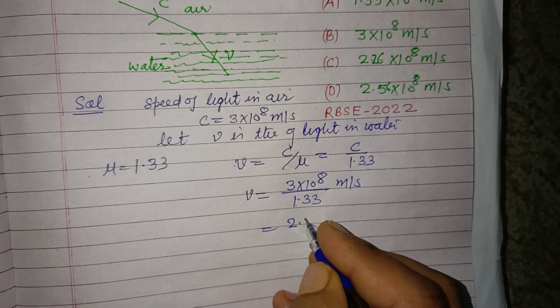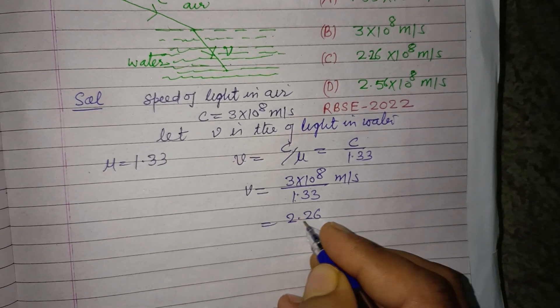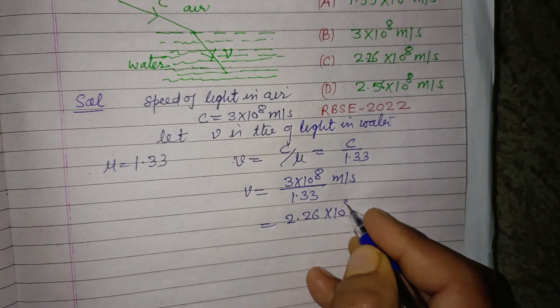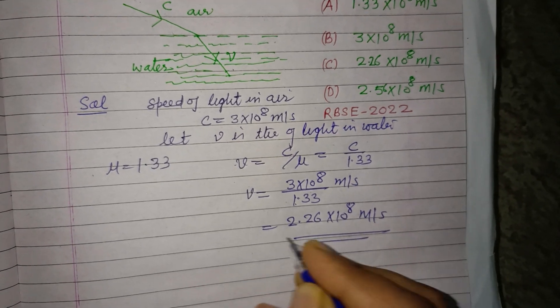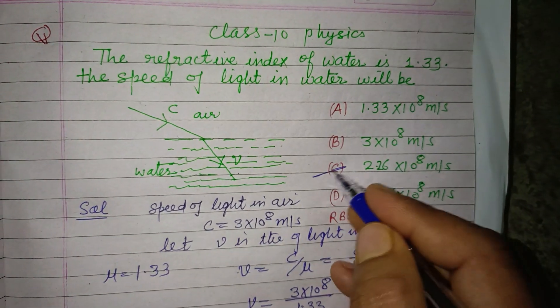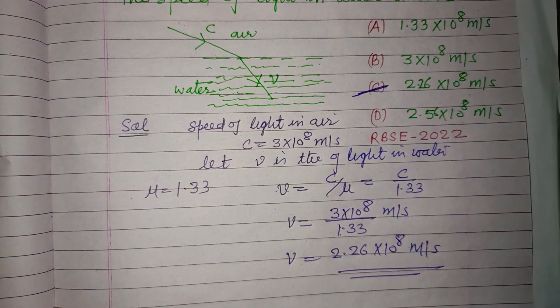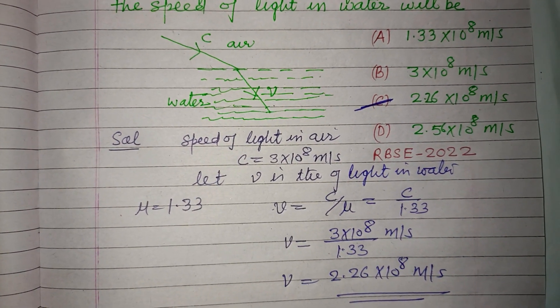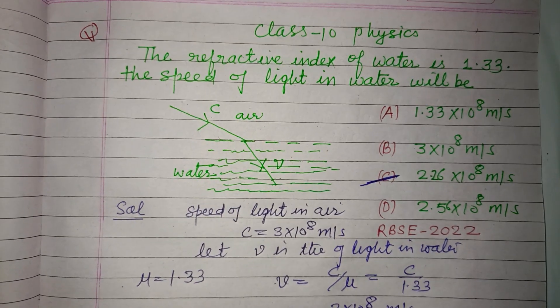2.26 into 10 to the power 8 meter per second is the correct answer, which is found in option C. So option C is correct. I hope you got it. Please like the video, subscribe the channel. Thanks for watching.